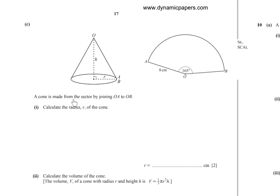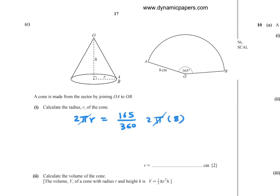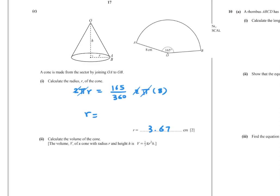Part (c): A cone is made from the sector by joining OA and OB. Calculate the radius r of the cone. The arc length of the sector equals the circumference of the cone's base: 2 pi r equals (165 over 360) times 2 pi times 8. Cancel pi and 2: r equals 165 over 360 times 8 equals 3.67 to 3 significant figures.